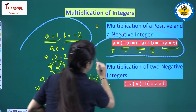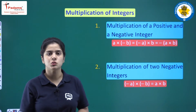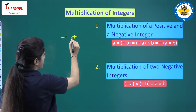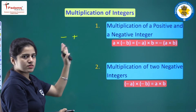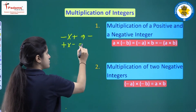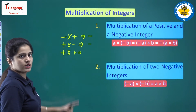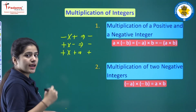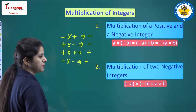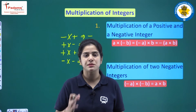Now let us see the second part: multiplication of two negative integers. Keep one thing in mind — in the multiplication of integers: minus times plus gives minus, positive times negative gives negative, positive times positive gives positive, and minus times minus gives plus. So if two negative integers are multiplied, the product will have a positive sign.